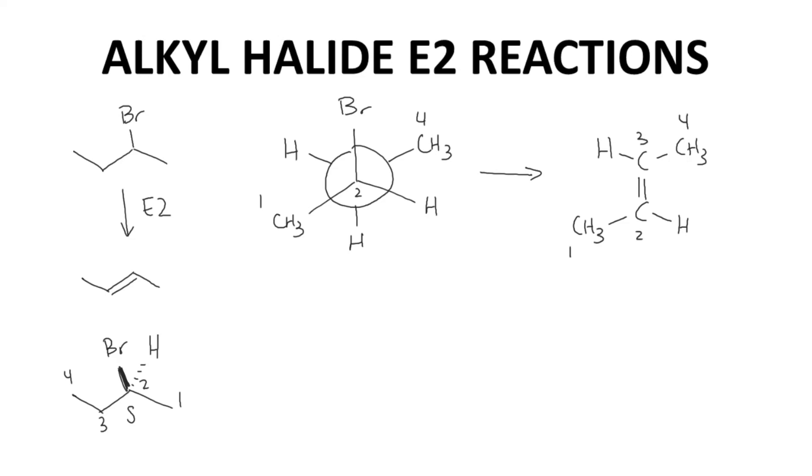Let's look at this result with carbon 1 and 4 across from each other, trans, so this would be the E-alkene isomer. There is another Newman projection we could consider.